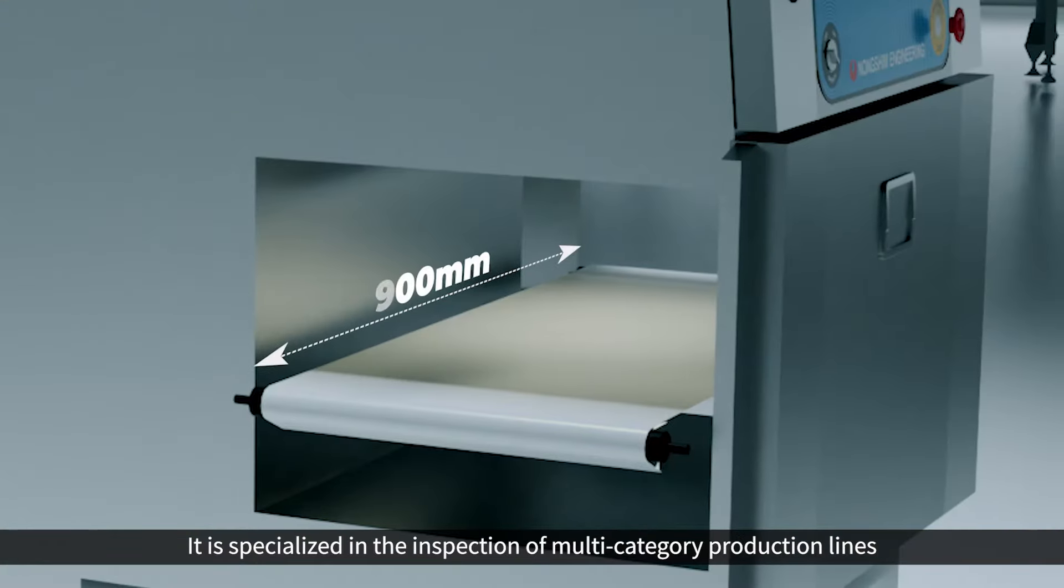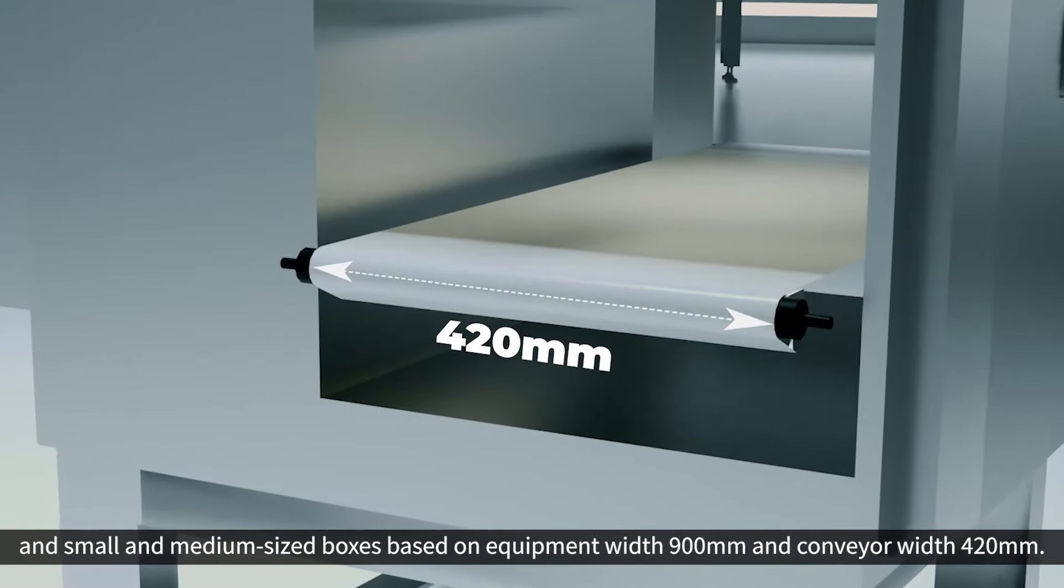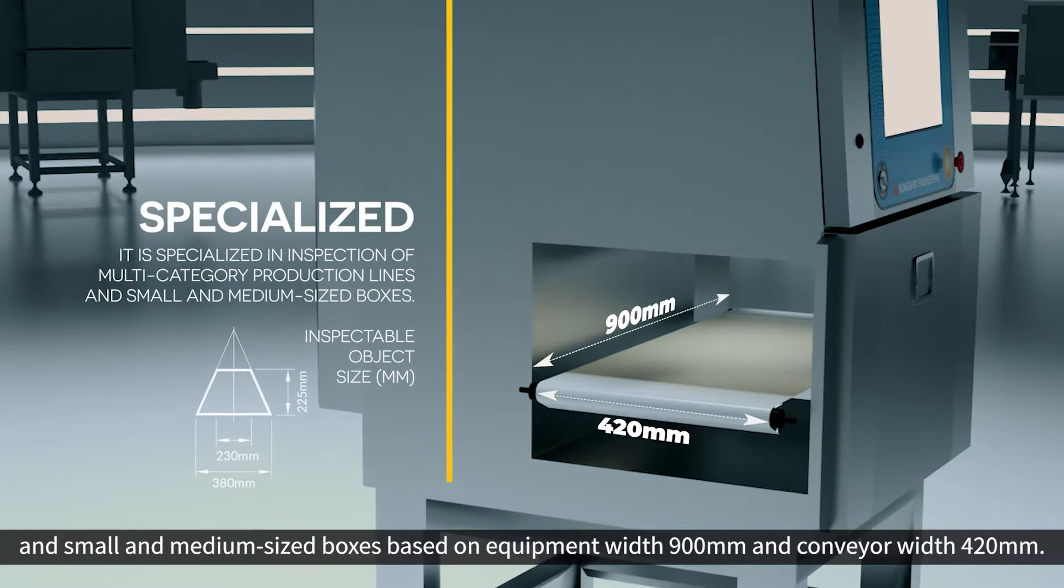It is specialized in the inspection of multi-category production lines and small and medium-sized boxes based on equipment width 900 mm and conveyor width 420 mm.